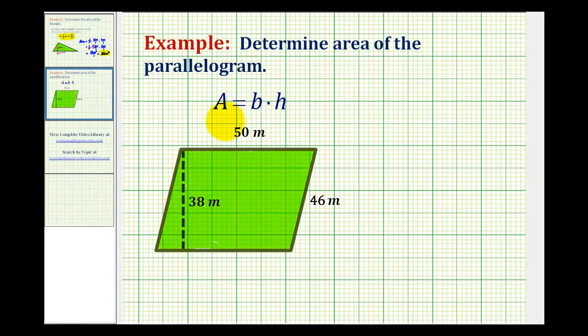The area formula for a parallelogram is area equals the length of the base times the height. This side here would be the base, which is the same length as the opposite side, so our base has a length of 50 meters.